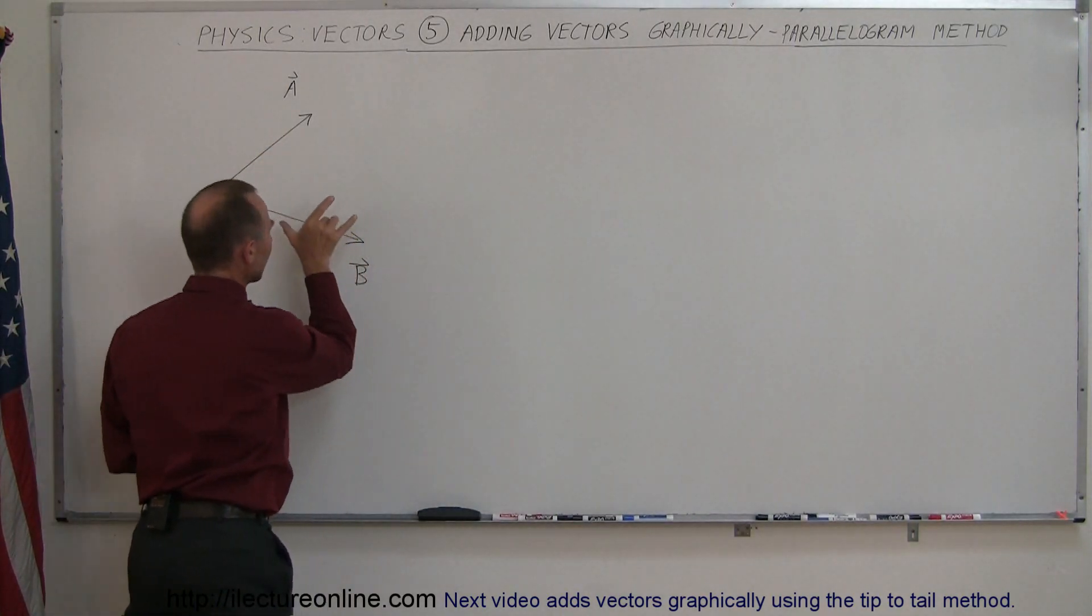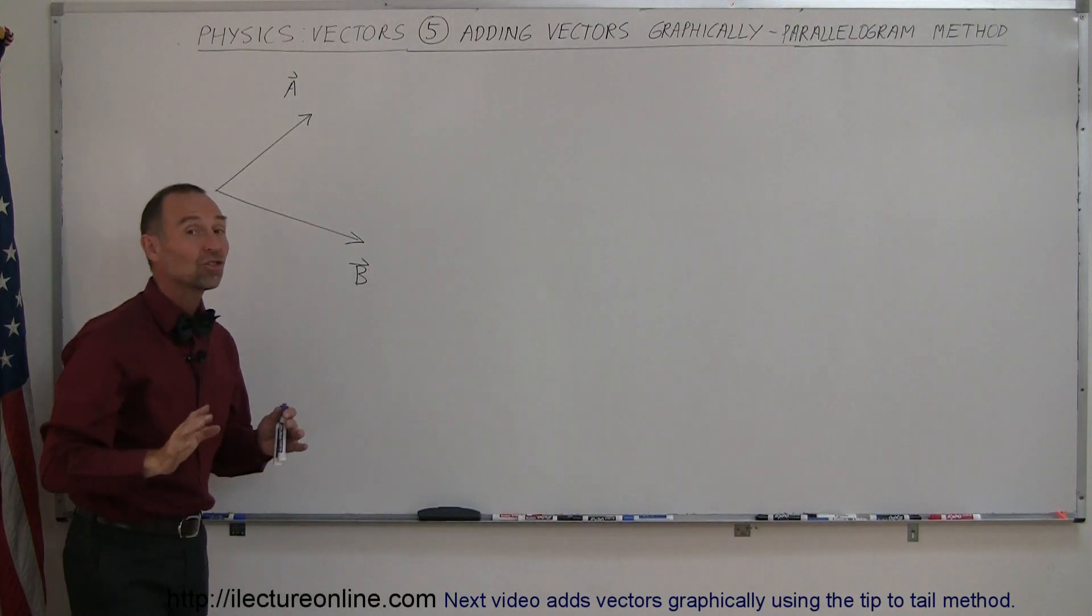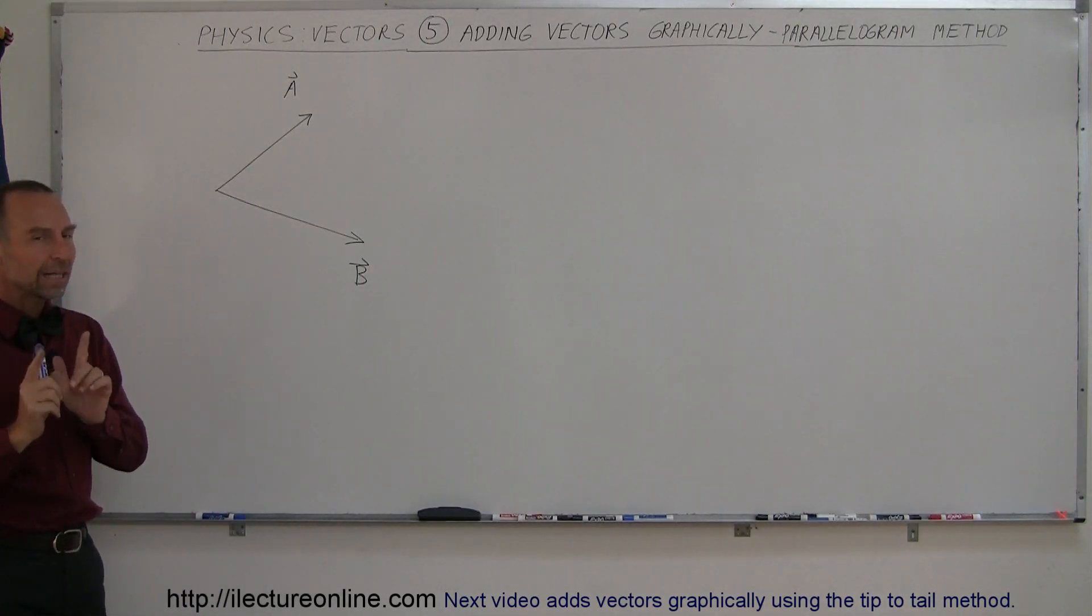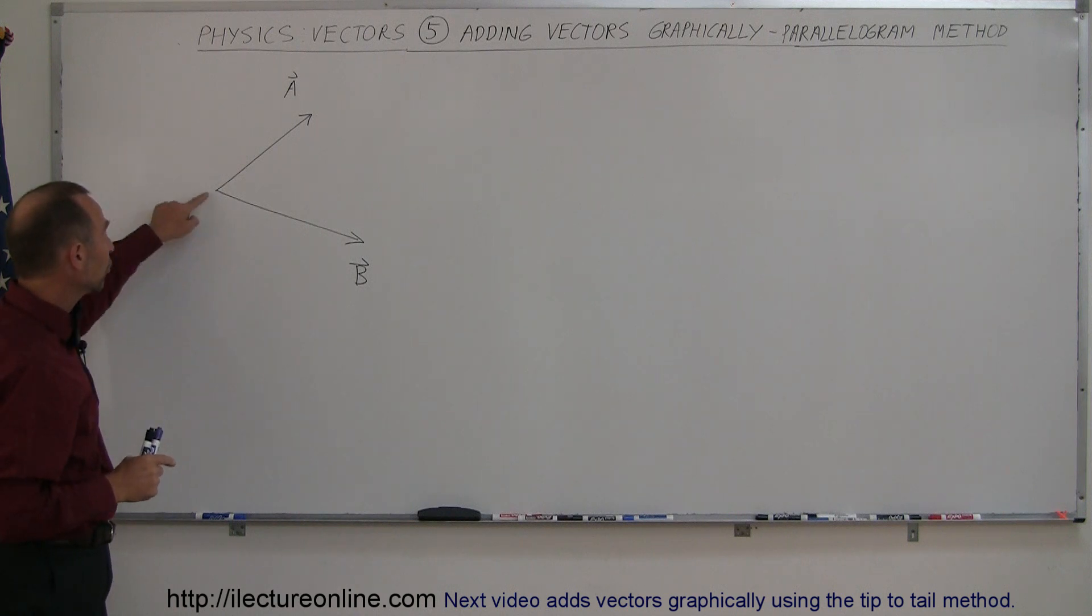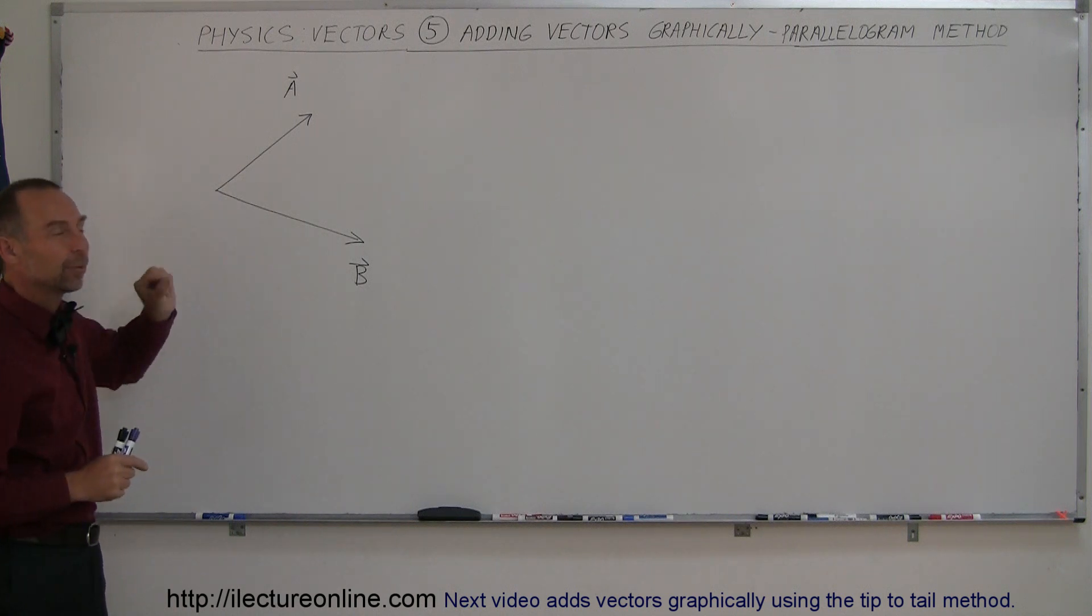You can take A, move it around anywhere you like. Take B, move it around anywhere you like. It doesn't change the vectors at all. But it's a good idea that when you're going to add them graphically that you put the two tails of the vectors together in one location.